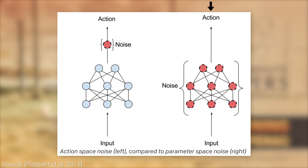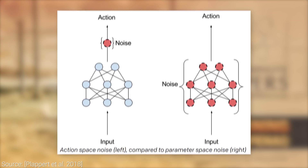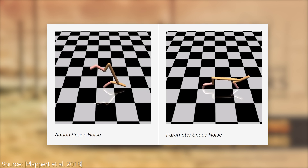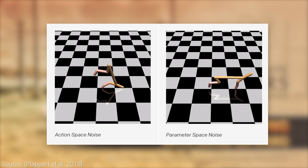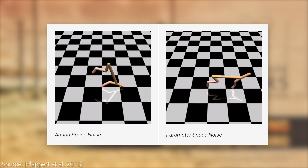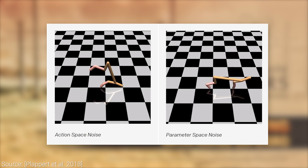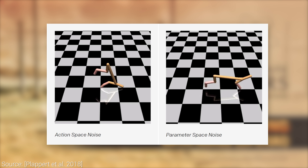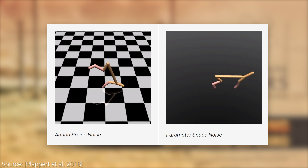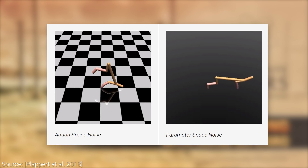This leads to less flailing and a more systematic exploration that substantially decreases the time taken to learn tasks with sparse rewards. For instance, it makes a profound difference if we use it in the Walker game. As you can see here, the algorithm with the parameter space noise is able to learn the concept of galloping, while the traditional method does — well, I am not sure what it is doing to be honest — but it is significantly less efficient.